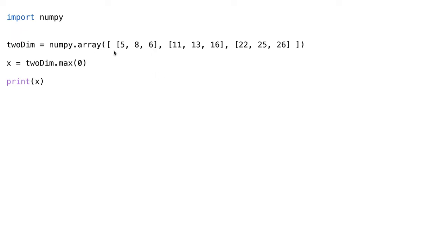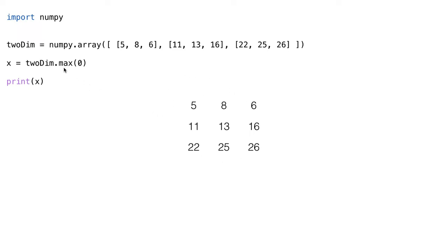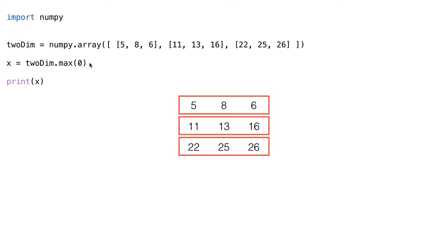So just to start off with, we still have the same exact two-dimensional array that we had earlier — essentially the same program except here instead of 2dim.mean(0) we have 2dim.max(0). By doing .max(0) we want to take the maximum value across the zeroth dimension, which we can think of as our rows — the rows of our array.